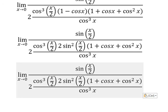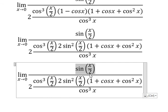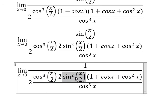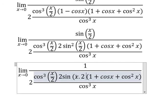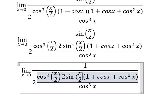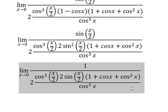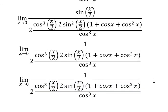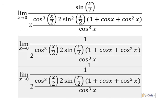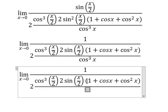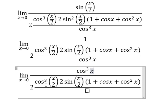Now we simplify: sine of x over 2 and sine of x over 2. And now we can put cosine of x to the power of 3 down here. Number 2 and number 2 give us number 4.